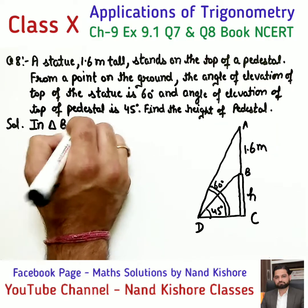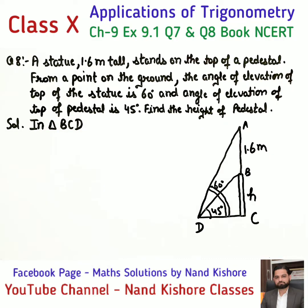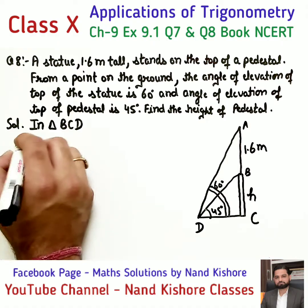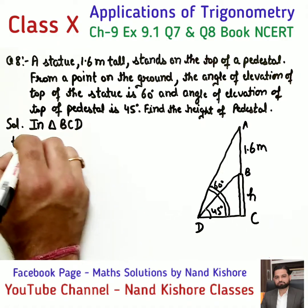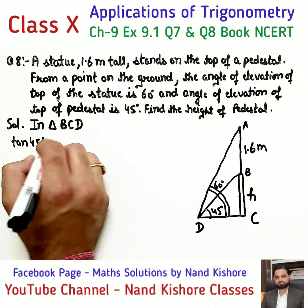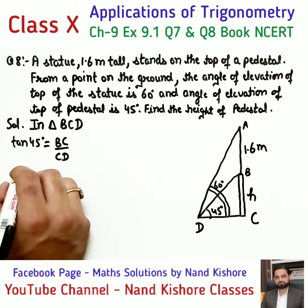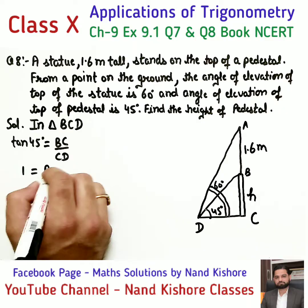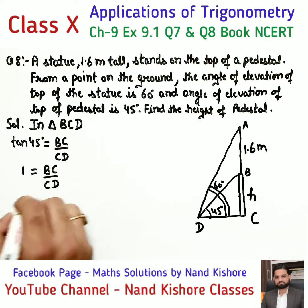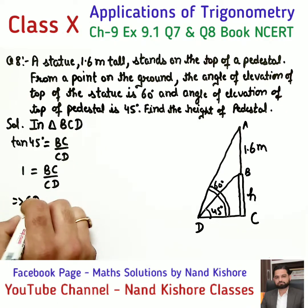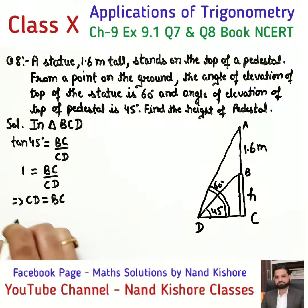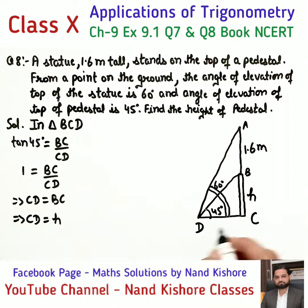Just like the previous question, let's go into the smaller triangle BCD first. In triangle BCD, tangent 45 equals BC upon CD, which equals 1. So CD equals BC equals H. Exactly the same steps as the previous question.